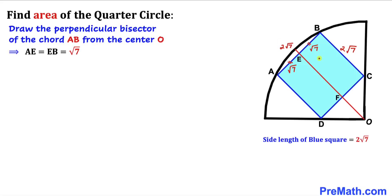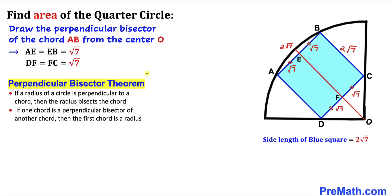Since we are dealing with square ABCD, side AB equals side CD, and these sides are parallel. Therefore point F is the midpoint of line segment CD, meaning DF and FC are equal — both equal to √7. We have used the perpendicular bisector theorem here: if a radius of a circle is perpendicular to a chord, the radius bisects the chord.